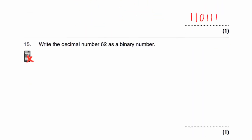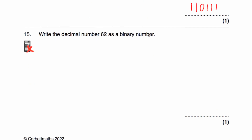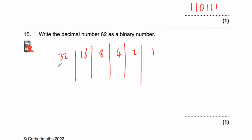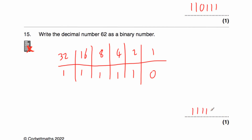Question 15 asks us to write the decimal number 62 as a binary number. Let's do our columns: 1, 2, 4, 8, 16, 32. And 64 would be too big, so we'll stop there. To make 62: 32, and we can add 16 — that's 48. Add an 8 — that's 56. Add a 4 — that's 60. Add a 2 — that's 62. We don't need a 1. So 62 as a binary number is 111110.